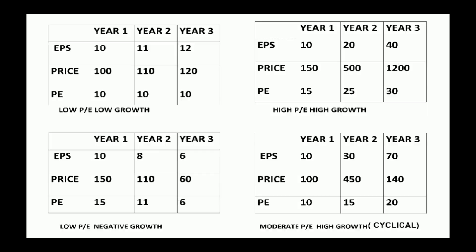Now we have to compare PE. There are four types of companies. The first company type is consistent earnings — the EPS is consistent, the price is consistent, and the PE is equal to the price divided by EPS.